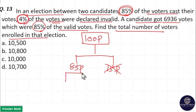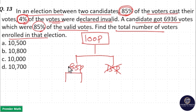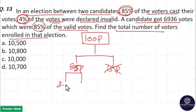Out of this 85 parts, 4% of the votes were invalid. So, 4% of 85: 10% is 8.5, 1% is 0.85, so 4% is 0.85 multiplied by 4. Multiplying 85 by 4 gives 340, so 0.85 into 4 equals 3.4 parts. This 3.4 parts is the invalid portion.